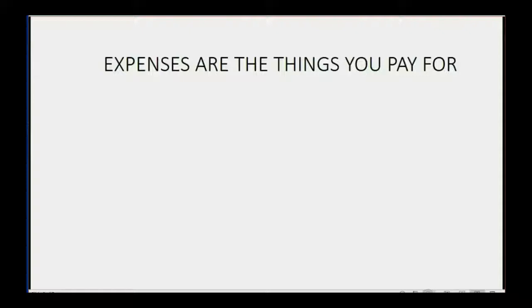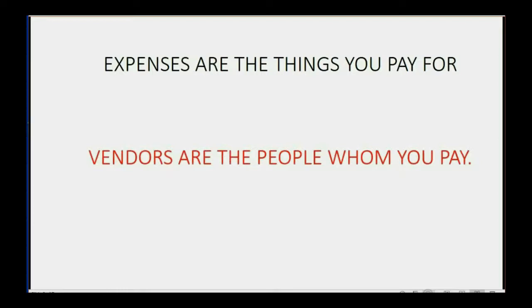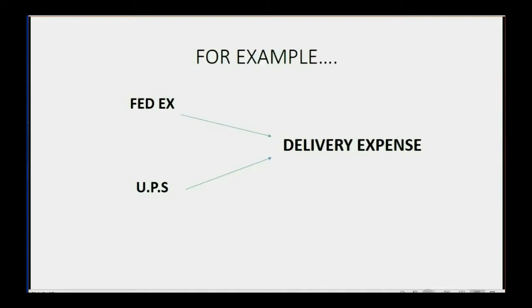Expenses are things you pay for. Vendors are the people whom you pay, and they go on a different list — you need a list for both. For example, FedEx and UPS are both vendors; they are the people you pay for the service. But Delivery Expense is the service you pay them for, and Delivery Expense goes as an account in your chart of accounts.